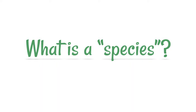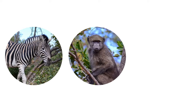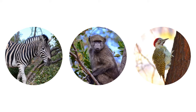Defining what exactly species means can be a little bit tricky, because the reality is we all sort of know what a species is and what it isn't. If we look at a group of animals, we know that a zebra and a monkey are not the same species, and a monkey and a woodpecker are not the same species. But then if it's so obvious, how exactly do we define it?